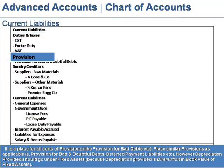Provisions. This is a place for all sorts of provisions like provision for bad debts, doubtful debts, deferred payment liabilities, etc. However, depreciation provided should go under Fixed Assets because depreciation provided is a diminution in the book value of Fixed Assets.